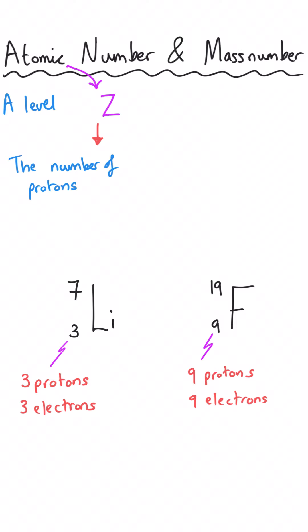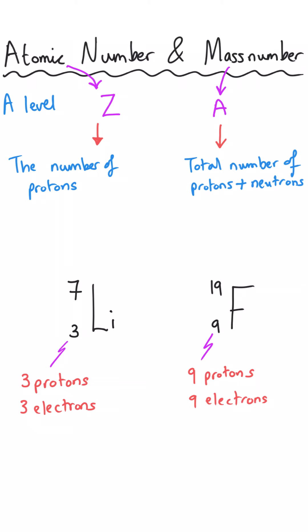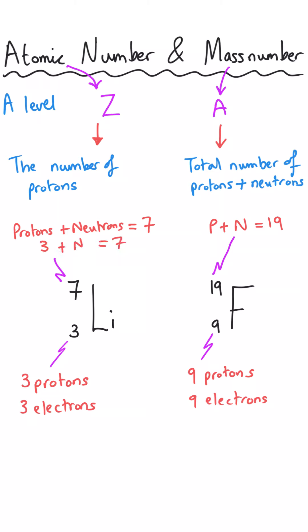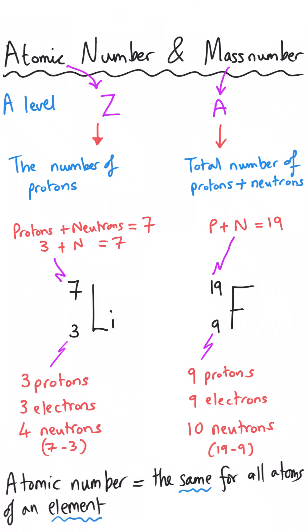The mass number is given the symbol A. It represents the total number of protons and neutrons added together in the nucleus. So lithium is seven — there are seven subatomic particles in the nucleus. And fluorine is 19. Since we know that three of lithium's particles are protons, the remainder must be neutrons: seven minus three means lithium has got four neutrons. And 19 minus nine for fluorine means it's got ten neutrons.